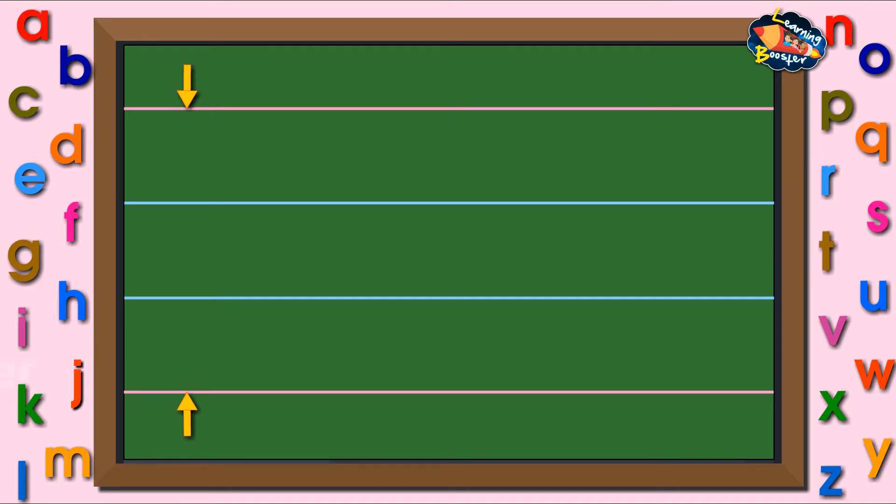Look at the two red and two blue lines. Each has a name: tall line, waist line, base line, and tail line.